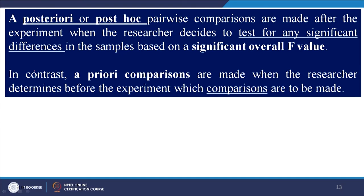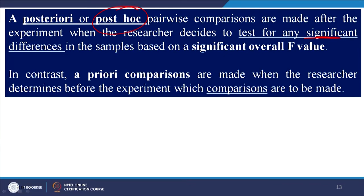There is something called a posteriori and post hoc comparison. Post hoc comparisons are made after the experiment when the researcher decides to test for any significant differences. As mentioned, ANOVA does not tell you between which two groups there is a significant difference, but post hoc tests will. Apart from post hoc tests, there is also something called a priori comparison, which helps decide in advance which comparisons are to be made between groups.